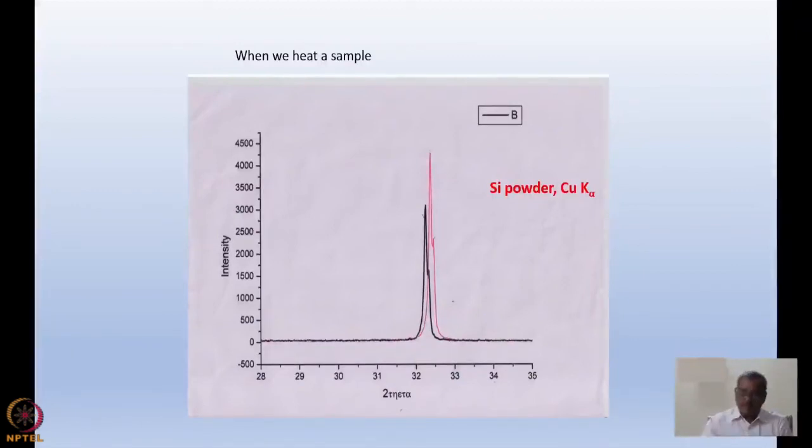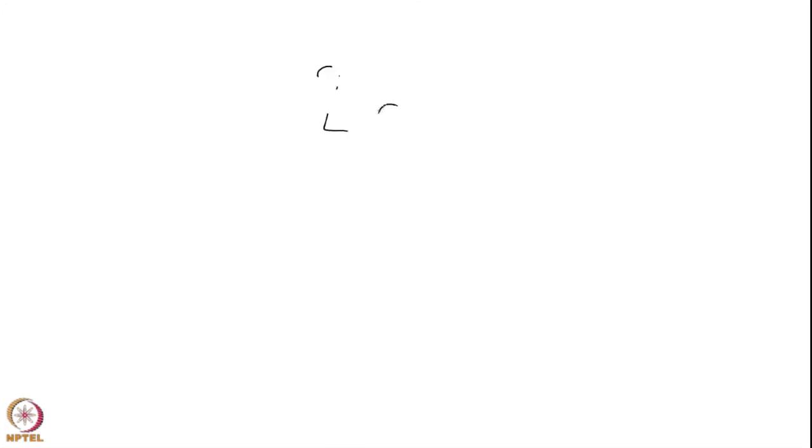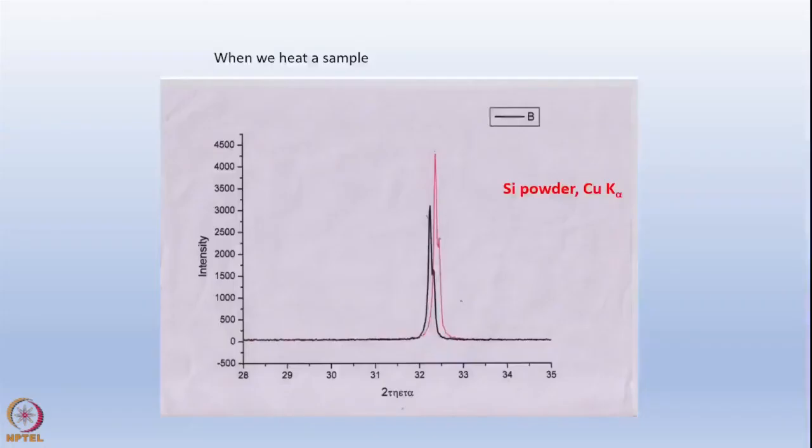But you have also noticed, I am sure, that the peak position has shifted. We have not talked about peaks shifting in our derivation so far. This is for the simple reason that when I heated the silicon powder, not only that thermal vibration caused the reduction in intensity, but the lattice expanded. That means, if it is 2D sine theta equal to n lambda, this is Bragg's law, if the lattice expands, for the same lambda, the theta has to decrease to maintain the equality in Bragg's law. And this is a signature of that.